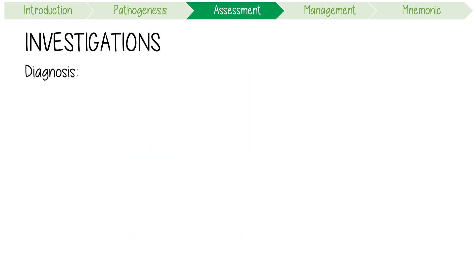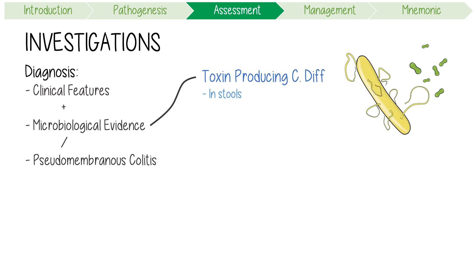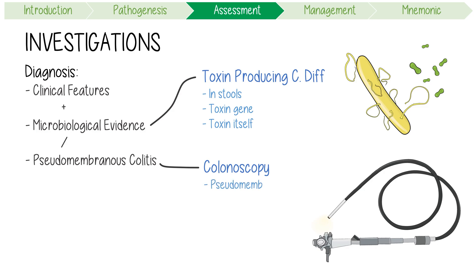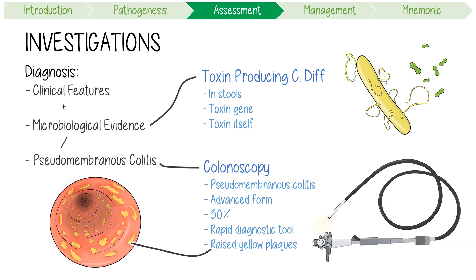Moving on to investigations. The diagnosis of C. diff infection can be made if there are clinical features, plus either microbiological evidence of disease or pseudomembranous colitis. Microbiological evidence of toxin-producing C. diff found in stools can be achieved with a positive nucleic acid amplification test for a C. diff toxin gene, or a positive stool test for the C. diff toxin itself. Secondly, a colonoscopy with findings demonstrating pseudomembranous colitis — an advanced form of the disease, visualized at endoscopy in only 50% of patients. Endoscopy is a rapid diagnostic tool, but only used in seriously ill patients. Pseudomembranes manifest as raised yellow or off-white plaques up to 2 cm in diameter scattered over the colonic mucosa.